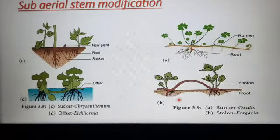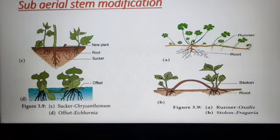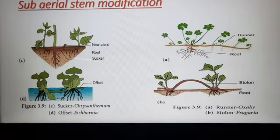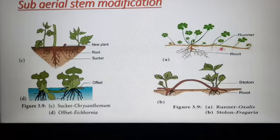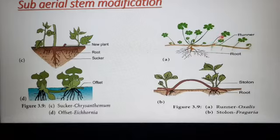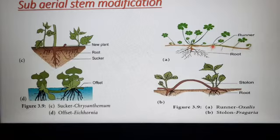Now we are going to discuss sub-aerial stem modification. The first one is the runner. It is a long, thin, green stem with long internodes growing horizontally on the soil surface. The stem grows horizontally, and the part which touches the soil produces roots. It arises from an axillary bud and gives out roots at the node, from which leaves and roots are also produced. Examples are grass and mint.